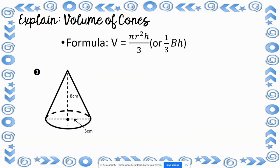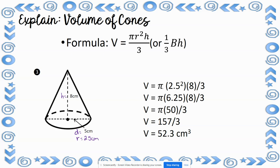For number 3, this cone has a diameter of 5 centimeters, so the radius is 2.5 centimeters. The height is 8 centimeters. Plugging in: pi times 2.5 squared times 8, divided by 3. 2.5 squared is 6.25; 6.25 times 8 is 50; 50 times 3.14 is 157. Dividing by 3 gives a volume of approximately 52.3 centimeters cubed.